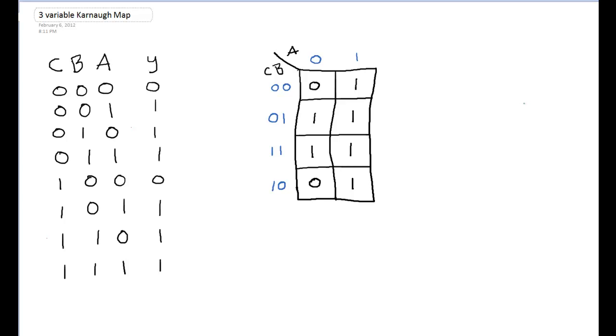Now the next step with the Karnaugh map is to make groupings, or you'll often hear them referred to as loops as well, in the Karnaugh map. And what we're looping are the 1s. We don't include the 0s in any of our loops, but we have to make sure that all of the 1s are included. Now you can make your groups, actually you have to make your groups in powers of 2.